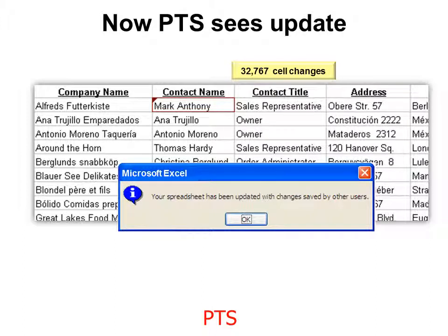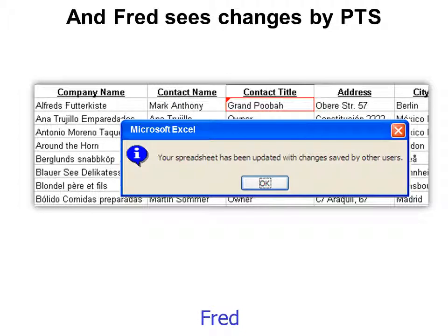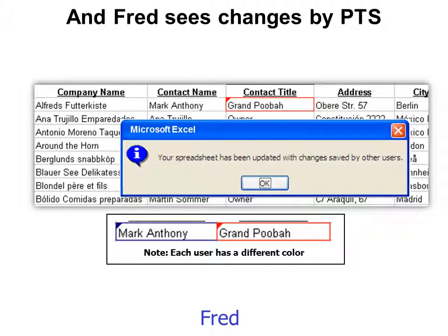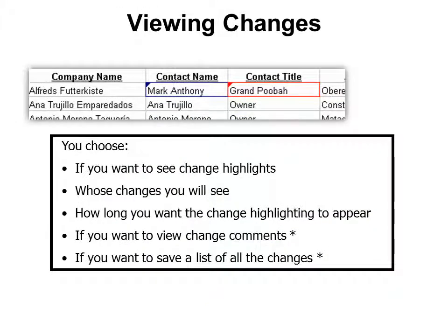You can have up to 32,767 cell changes. Fred sees changes by PTS shown in red, while PTS saw changes in blue. There can be 32 color choices. You get to choose if you want to see change highlights, whose changes you'll see, how long the change highlighting appears, if you want to view change comments, and if you want to save a list of all the changes.